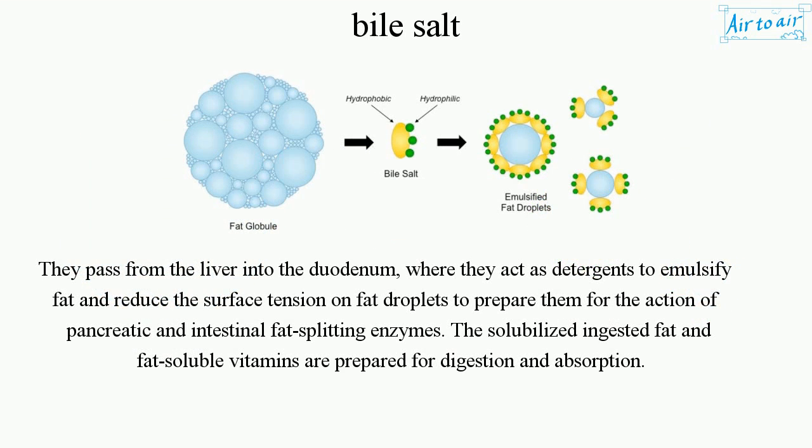They pass from the liver into the duodenum, where they act as detergents to emulsify fat and reduce the surface tension on fat droplets, preparing them for the action of pancreatic and intestinal fat-splitting enzymes. The solubilized ingested fat and fat-soluble vitamins are thereby prepared for digestion and absorption.